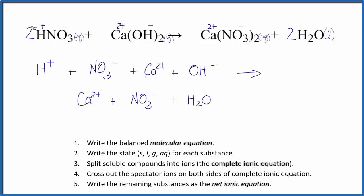We need to take into account the coefficients here and these subscripts as well. So we have 2 times the HNO3, so we're going to have 2 H plus ions and 2 of the nitrates. Calcium is the same. Hydroxides, we have 2 of those. And then on the product side, we have our 1 calcium and our 2 nitrates here, and our H2O. So this is the complete ionic equation.